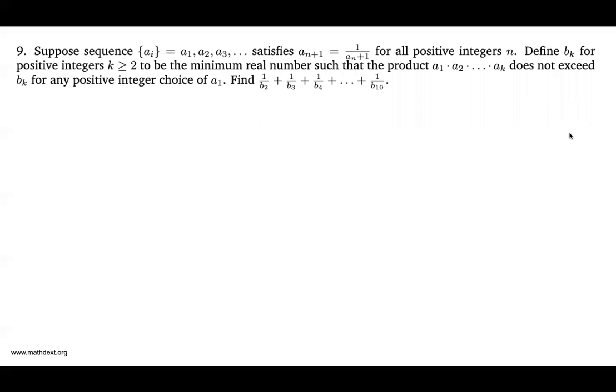This is problem 9 of the 2022 MMATS individual round. The problem reads: suppose sequence a sub i equals a sub 1, a sub 2, a sub 3, and it satisfies a sub n plus 1 equals 1 over a sub n plus 1 for all positive integers n.